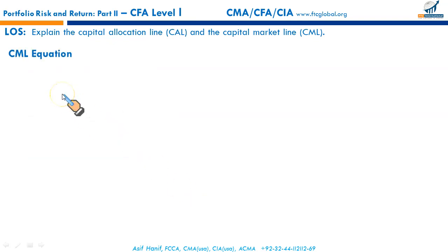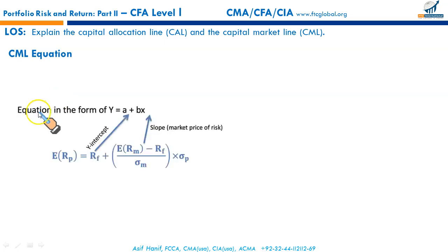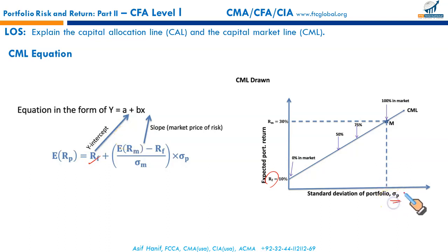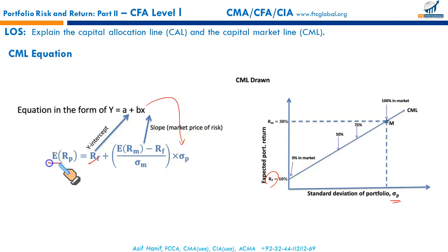Now let us derive the CML equation. This is the equation of a line — a linear equation, y = a + bx. Our 'a' represents the y-intercept, which in this case is RF. On the x-axis we have the standard deviation of the portfolio, representing x. On the y-axis we have the expected portfolio return.